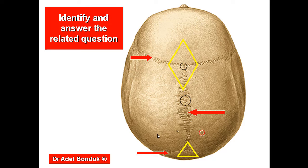This is the parietal emissary foramen, also called the parietal foramen. It transmits an emissary vein connecting the veins of the skull with the superior sagittal sinus.